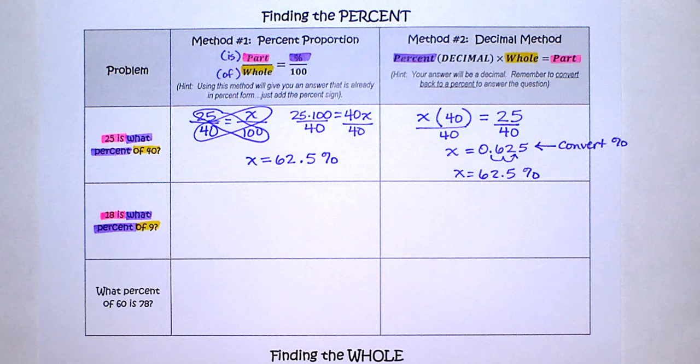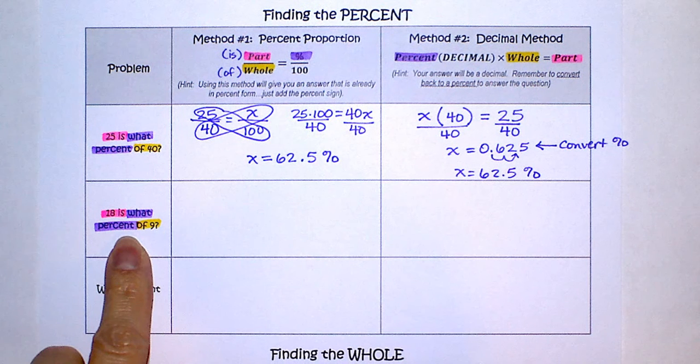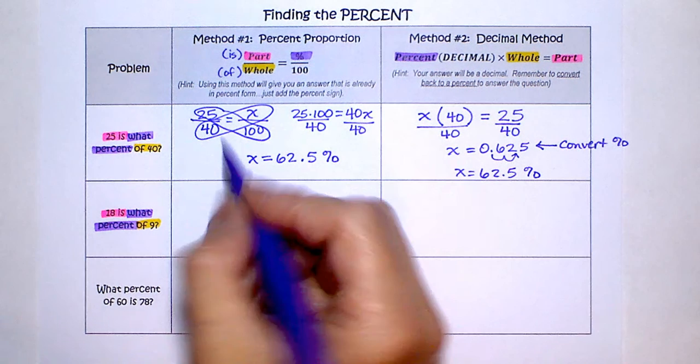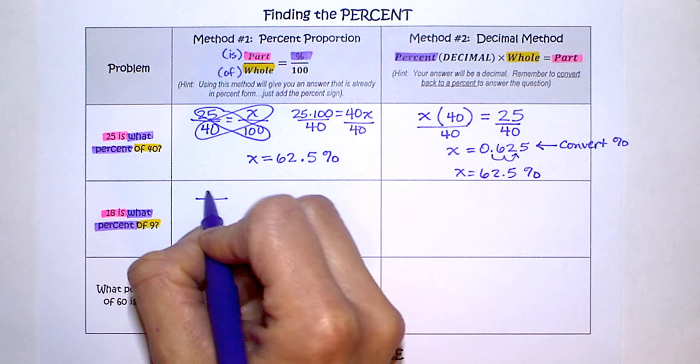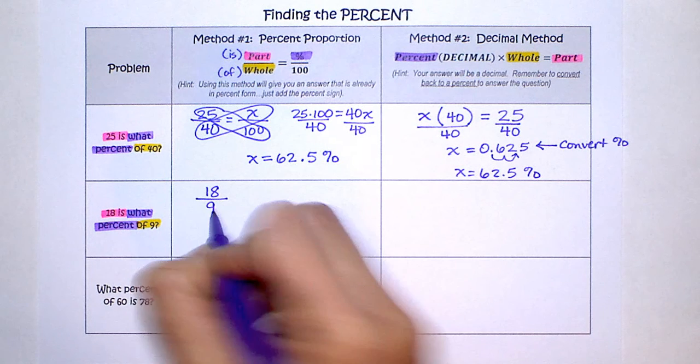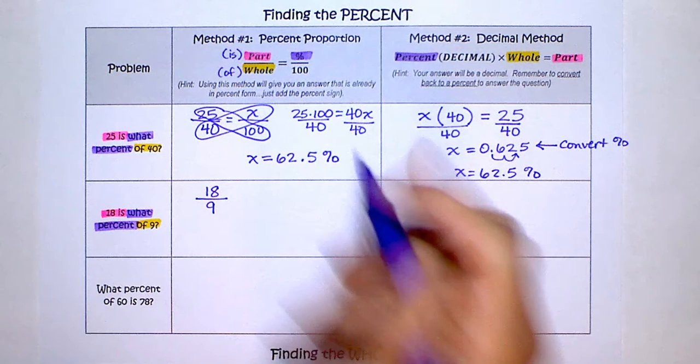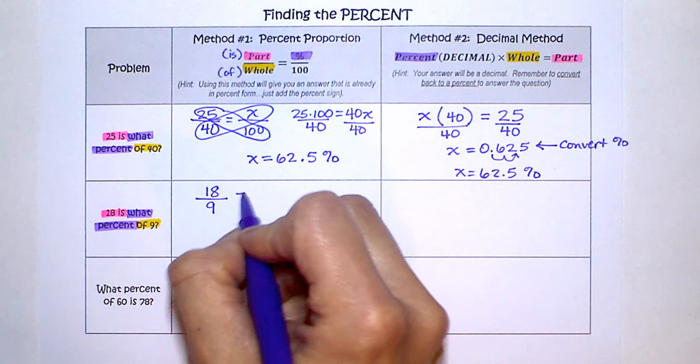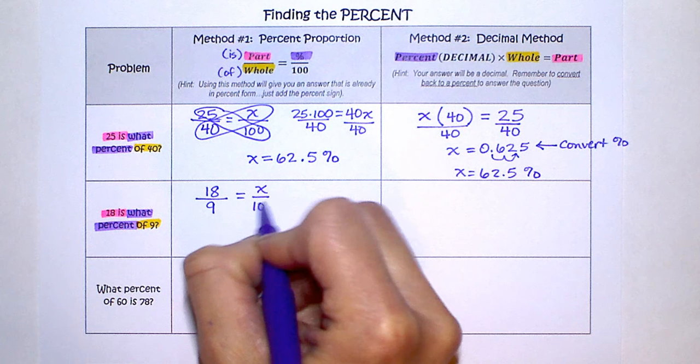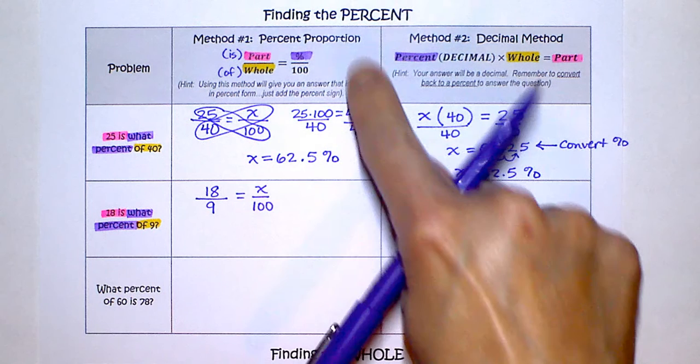So let's set up that proportion. Now remember, if I'm going too fast for you, please pause the video, catch up, and then play it when you're ready. So 18 over 9. Be careful, that is the is, that's the part, and that's the whole. 18 is what percent? So x over 100. That's using the proportion method.